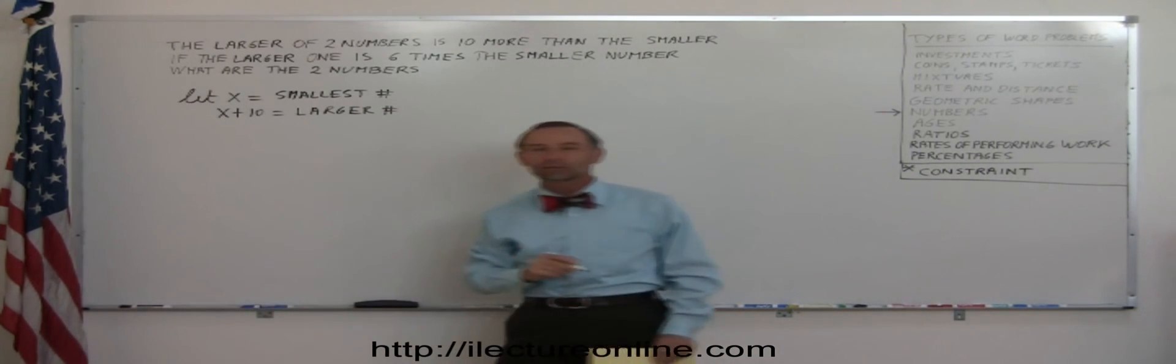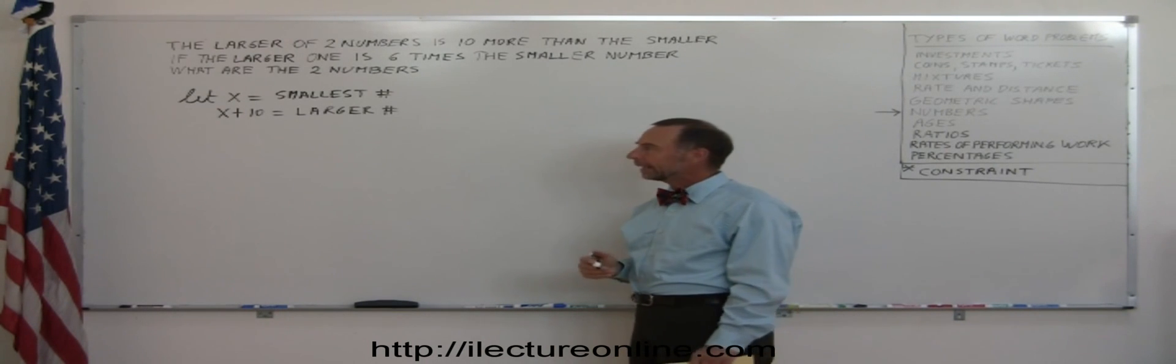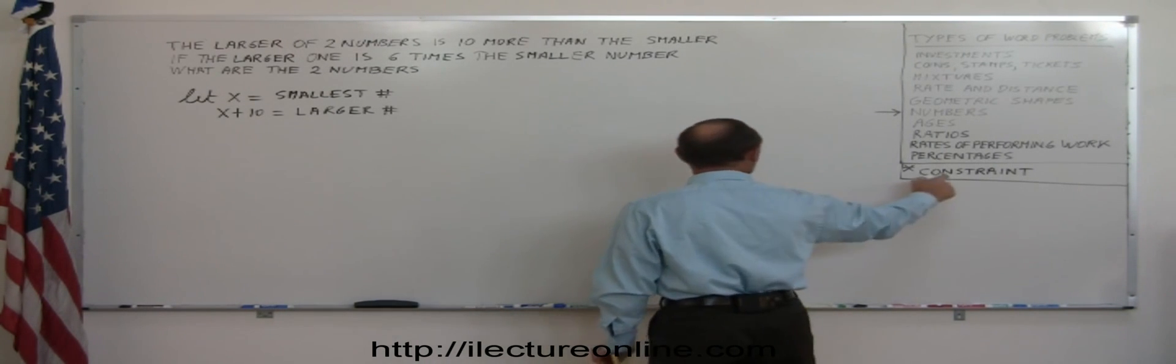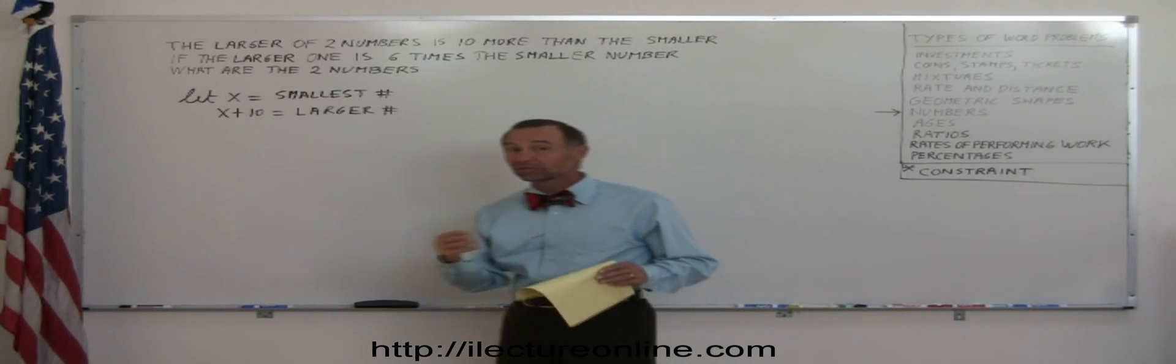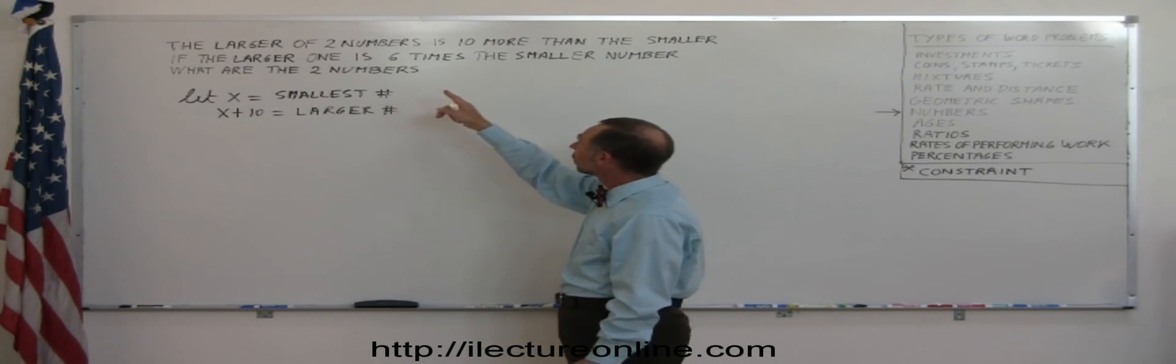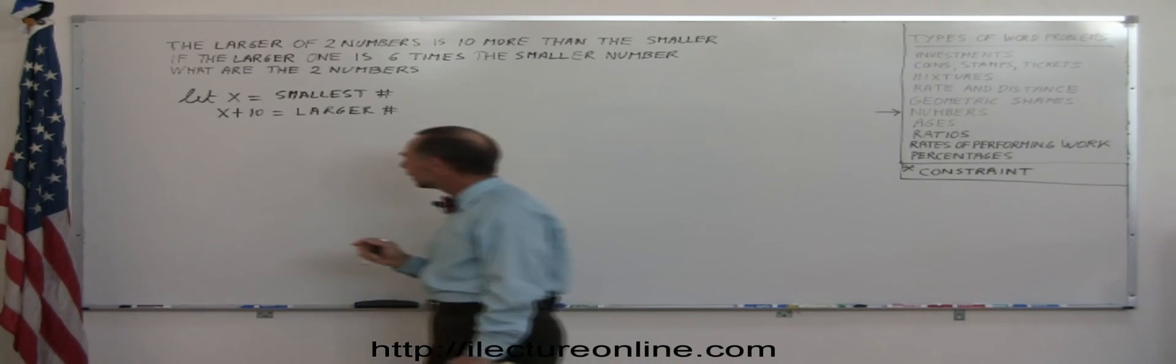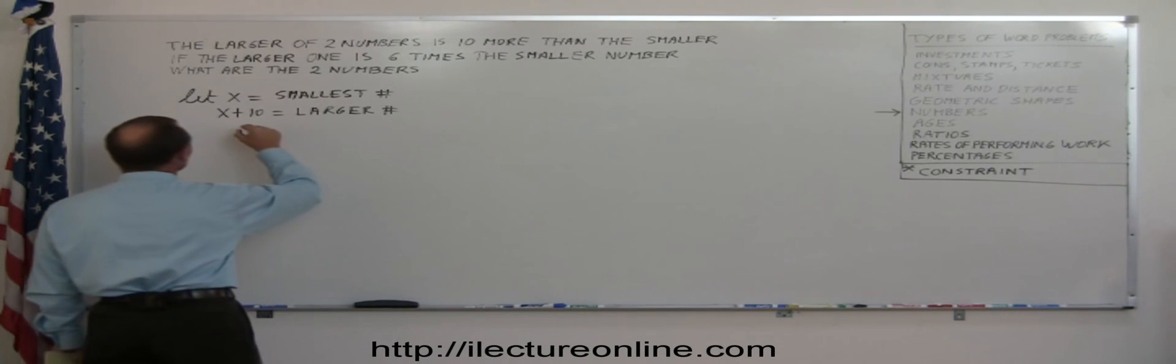Now you have to find your two numbers. We want to solve what those two numbers are, and for that we need a constraint. We're looking for some information that helps us figure out what these two numbers are. They tell us here that the larger one is six times the smaller number, and it's not a bad idea to actually write it like this.